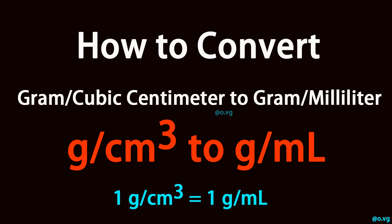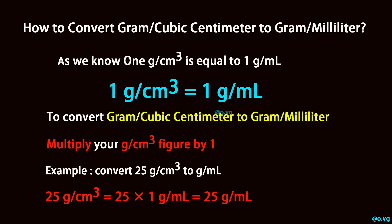How to convert gram per cubic centimeter to gram per milliliter? As we know, 1 gram per cubic centimeter is equal to 1 gram per milliliter.